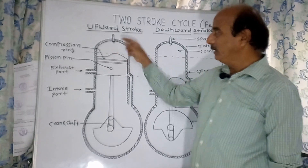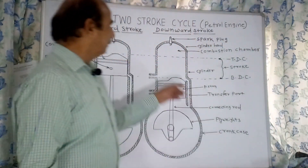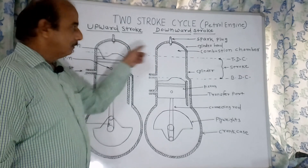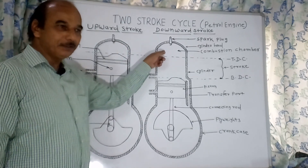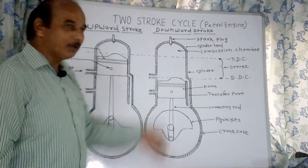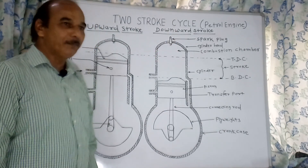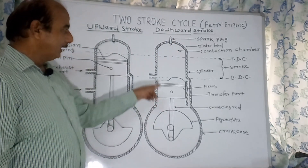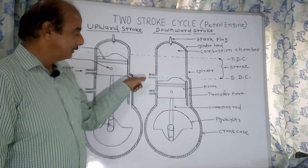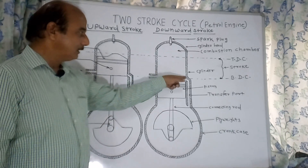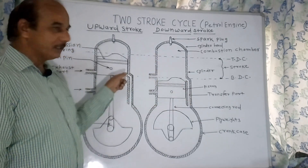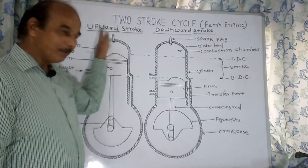In the downward stroke, an explosion takes place. Due to the explosion, pressure is developed. The pressure acts on the piston and the piston comes down rapidly. At that time, the exhaust port opens, and the transfer port also opens. The burnt gases go out through the exhaust port into the atmosphere.